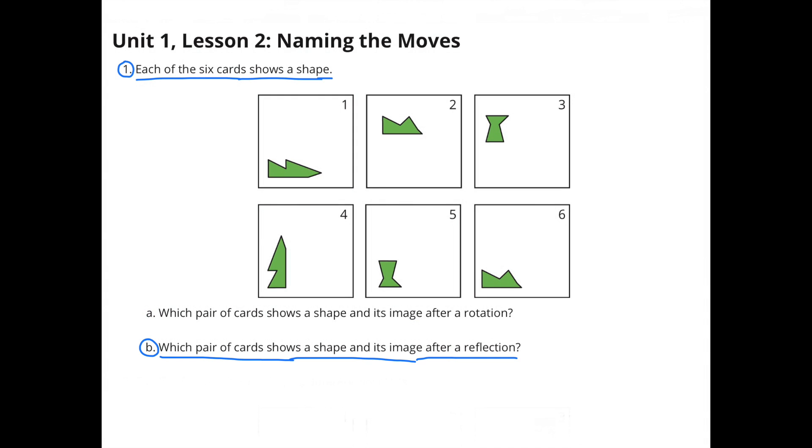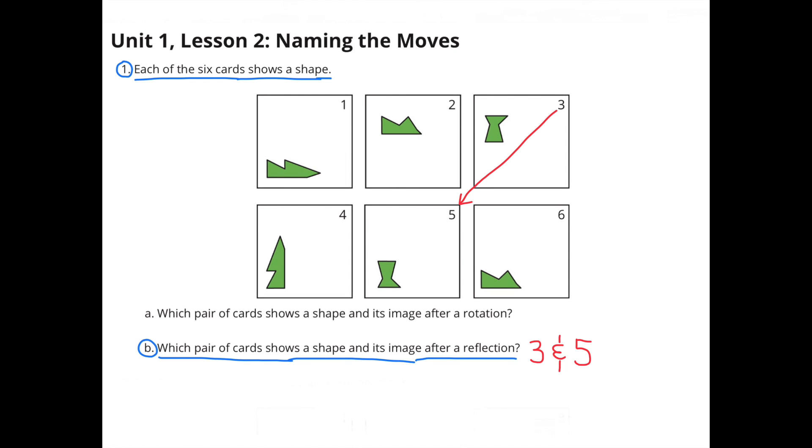B. Which pair of cards shows a shape and its image after a reflection? So again, you're looking for two cards, but this time you're looking for the shape and its image after a reflection. Cards 3 and 5 show the shape and its image after a reflection.